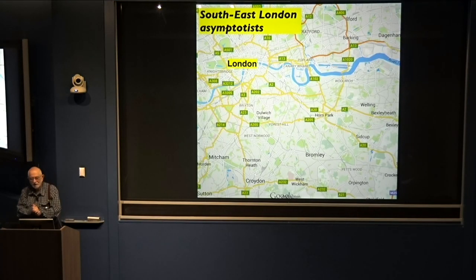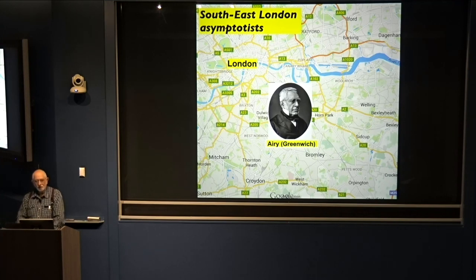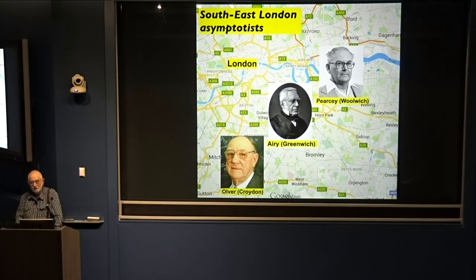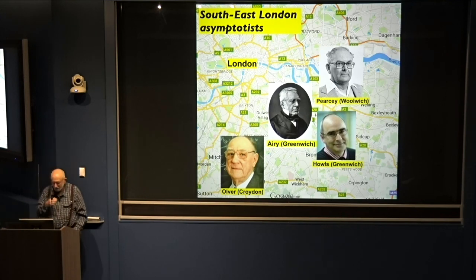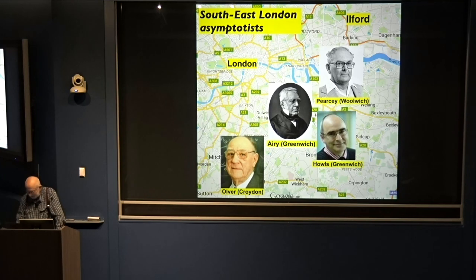There's a weird connection with South East London. Airy was the Astronomer Royal in Greenwich. Frank Olver came from Croydon in South London. Tom Peircy of the Peircy function came from Woolwich in South East London. And Chris Howells, my student and now a professor in Southampton, also. I'm not part of this because I come from north of the river — different from those characters. It has no significance at all.